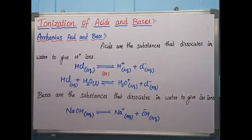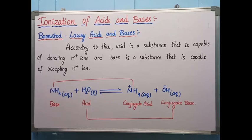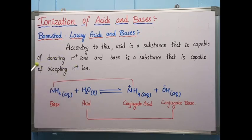Now let us see about Brønsted-Lowry acids and bases. According to Brønsted and Lowry, an acid is a substance which is capable of donating protons — that is, donating H+ ions — and a base is a substance which is capable of accepting H+ ions. Simply, a proton donor is an acid and a proton acceptor is a base.